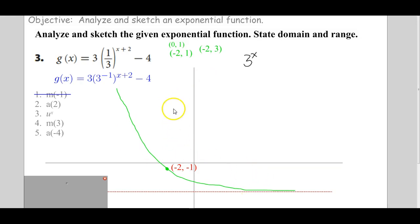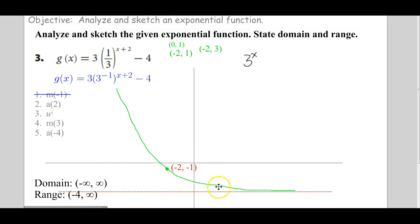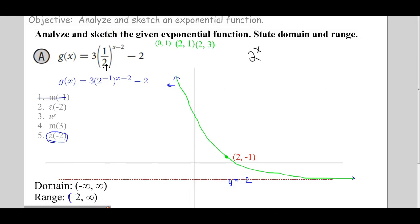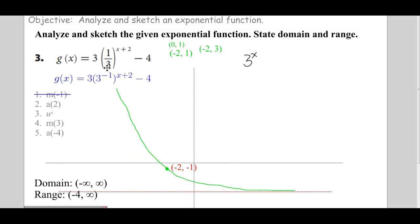Then we do the domain — like every other exponential function, the domain is all real numbers. And the range: looking here, from negative 4 — that's the vertical shift — so it's from negative 4 up towards infinity. There's a quick example for graphing 3 exponential functions where the bases are less than 1: 1 third, 1 tenth, and 1 half. So those are all decay functions, approaching the horizontal asymptote from a smaller value.